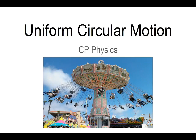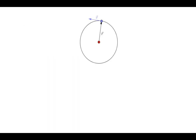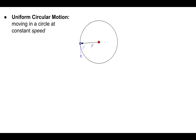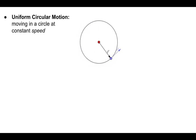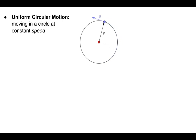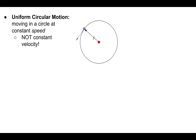Today we're going to talk about uniform circular motion. The word uniform means that this object is moving in a circle at a constant speed. The reason I say constant speed — with speed in italics — is because the velocity itself is not constant. Velocity is a vector with both a magnitude and a direction, so because the velocity vector is constantly changing direction, it is not a constant velocity.